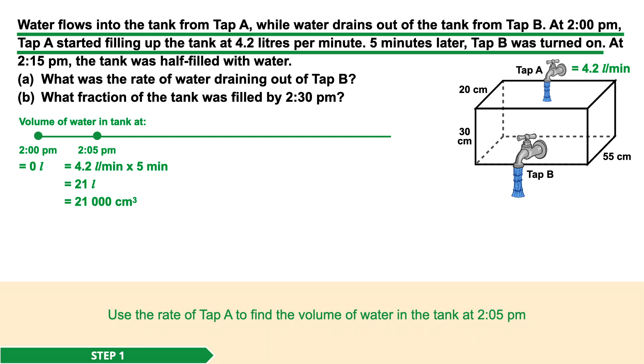Step 1. Water flows into the tank from tap A, while water drains out of the tank from tap B. At 2:00 p.m., tap A started filling up the tank at 4.2 liters per minute. Five minutes later, tap B was turned on. Having read this, we know that initially the tank was empty at 2:00 p.m., and for the first 5 minutes, water flowed into the tank from tap A at a rate of 4.2 liters per minute.